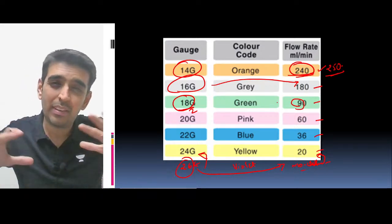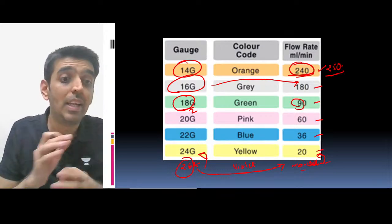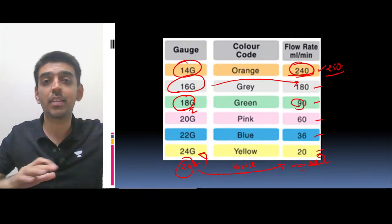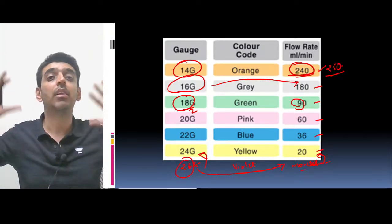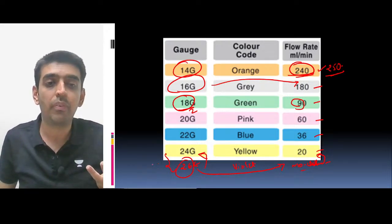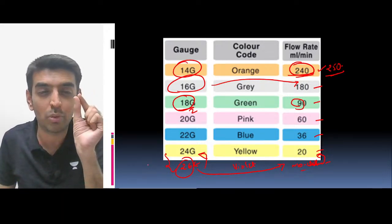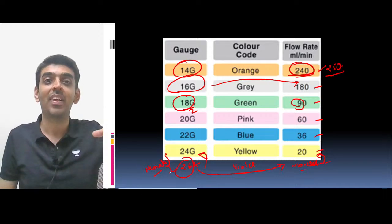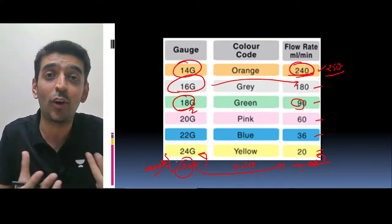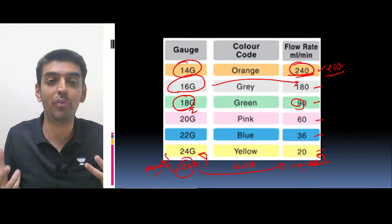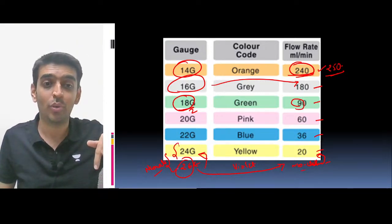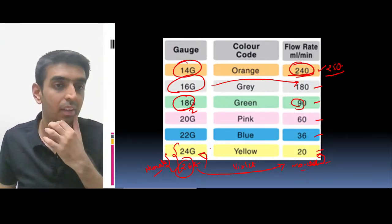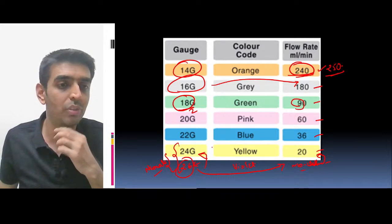The rule is: lesser the gauge, more is the flow rate; more is the gauge, lesser is the flow rate. In neonates we use 26 or 24 gauge because the vein size is very small. This year's INICET actually asked: if you want to cannulate a neonate, which gauge IV cannula will you use? The answer is 24 and 26 gauge for neonates and newborns.